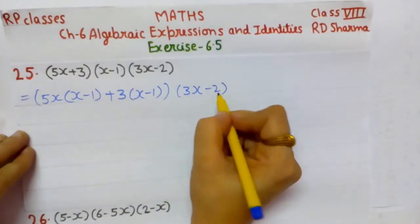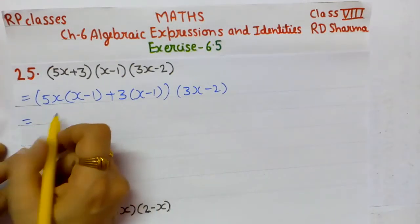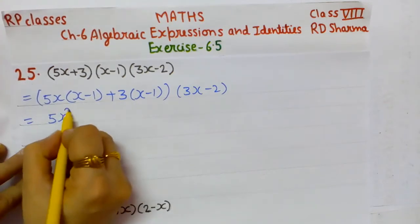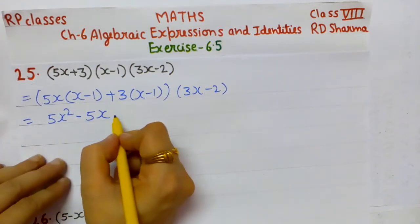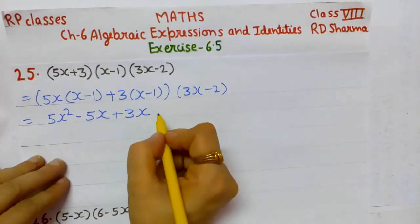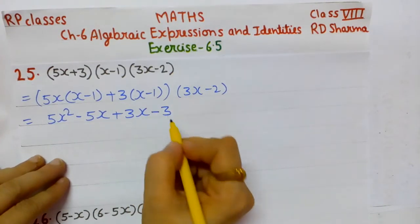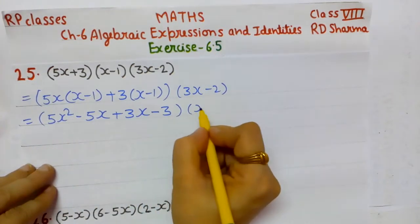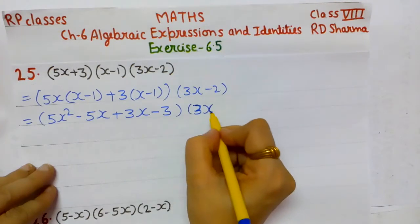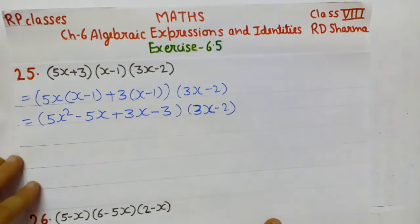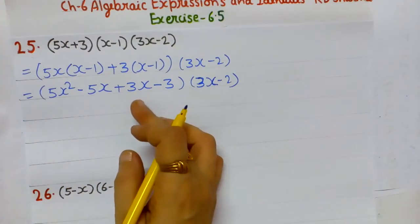Third bracket (3x - 2) as it is. Now multiplying: 5x into (x - 1) gives 5x² - 5x, and 3 into (x - 1) gives 3x - 3.